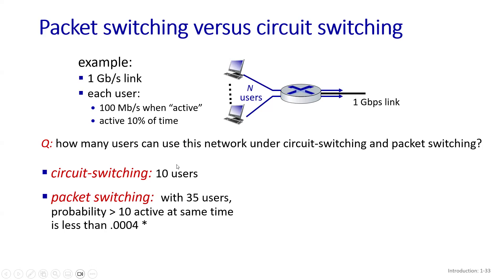In the packet switching scenario, if we have 35 users, because users are only active 10% of the time, the probability that more than 10 users are active at the same time is 0.0004 — calculated through binomial distribution. This means you can actually accommodate more than 35 users. In circuit switching, no matter what, you can only accommodate a maximum of 10 users.